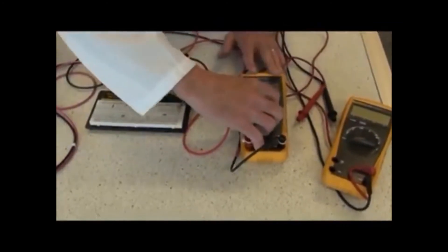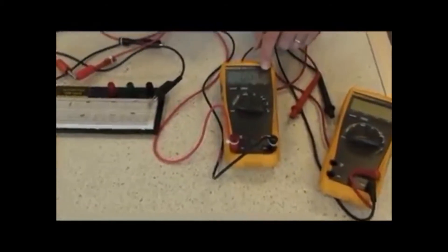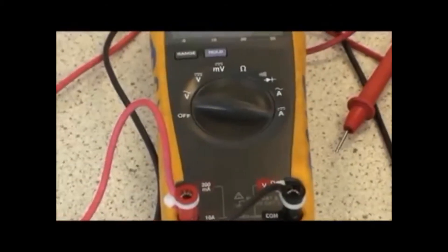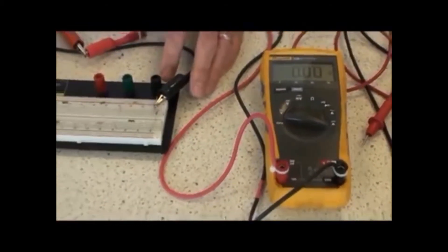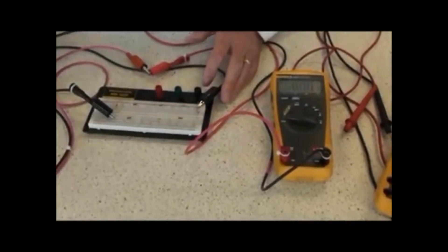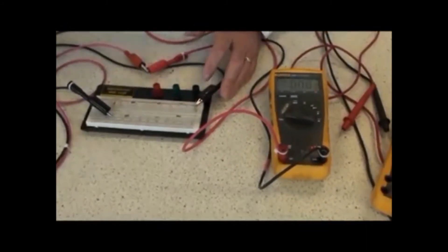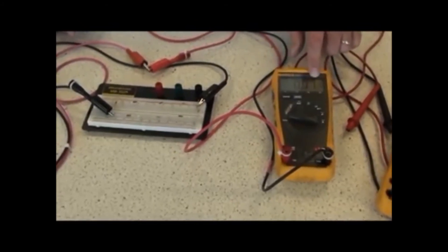Move the meter over to measure current. Connect the black lead or the remaining lead of the meter onto the power supply and turn the power supply on. I'll measure 0.01 of an amp.